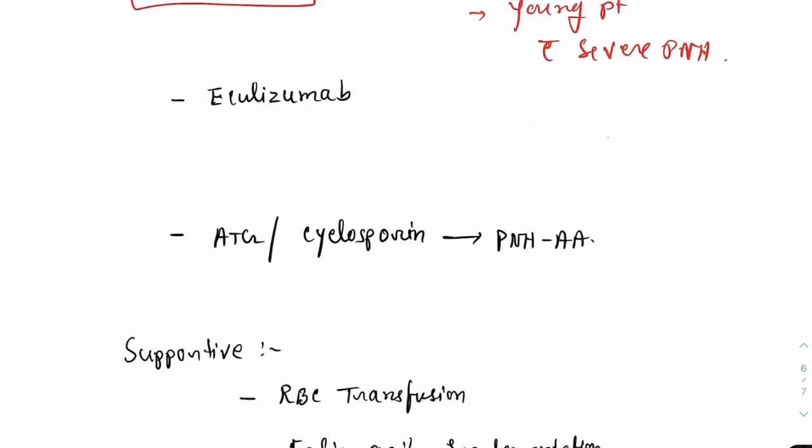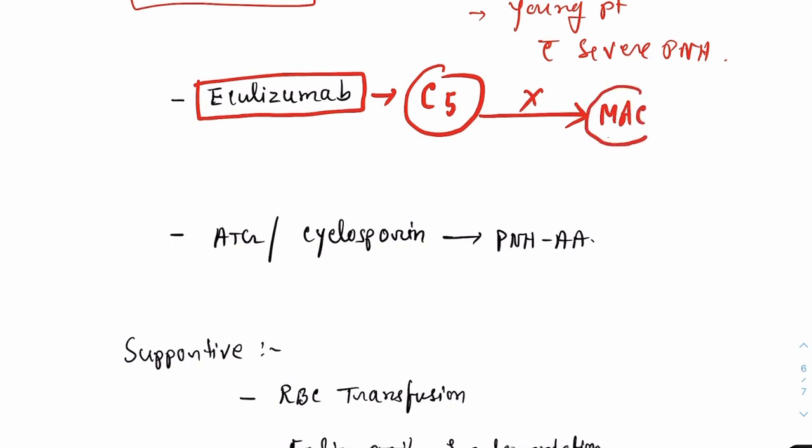The second treatment option is eculizumab. Eculizumab is a humanized monoclonal antibody and it is targeted against the C5 component of complement system. Once C5 is blocked, there will be no formation of membrane attack complex. Membrane attack complex is the ultimate component of the complement cascade. So if there is no formation of membrane attack complex, there will be no destruction of RBCs and no intravascular hemolysis.